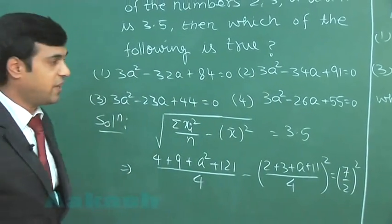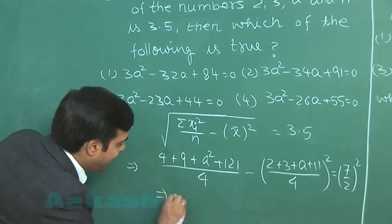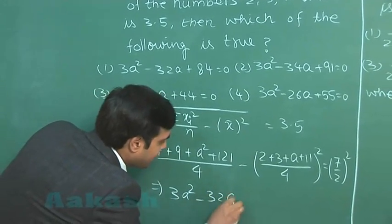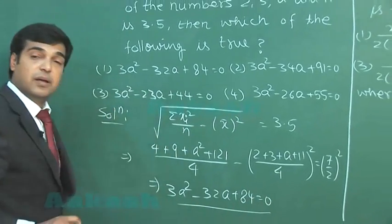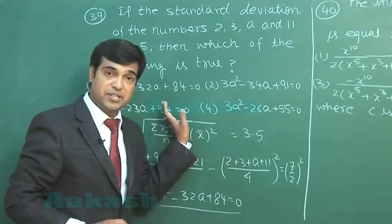Just simplify the equation to obtain the result as 3A square minus 32A plus 84 equals 0. We can also apply one elimination method for the same.